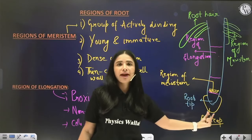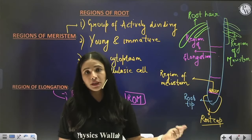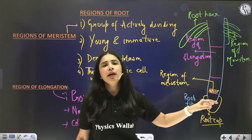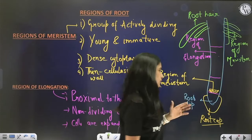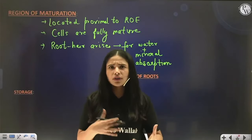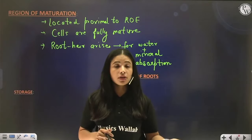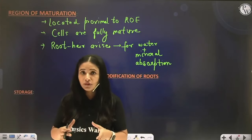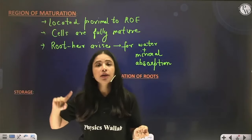So the three regions of the root are: region of meristem, region of elongation, and region of maturation — followed by the root tip protected by the root cap. All these points should be on your fingertips. Moving ahead: the main function of roots is to provide support, anchorage, and water and mineral absorption. If roots are performing some extra functions apart from absorption and anchorage, that is called modification of roots.